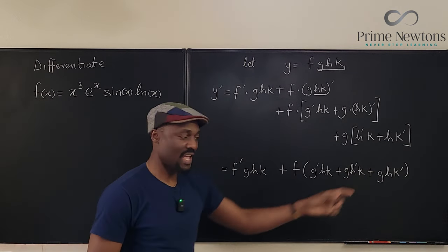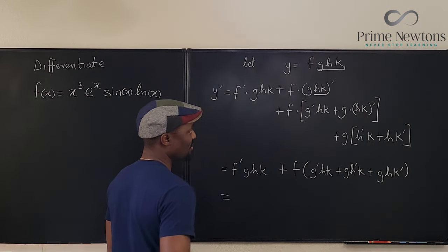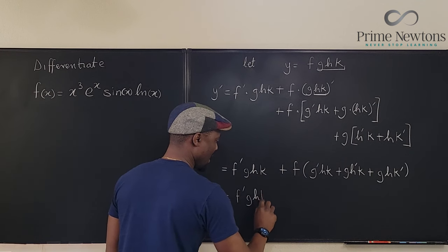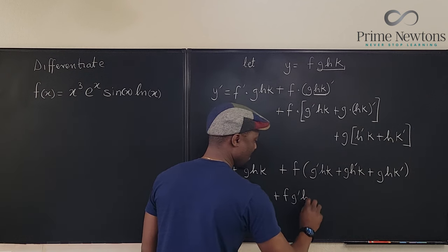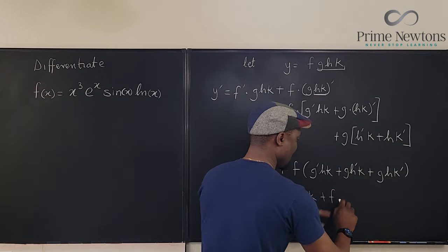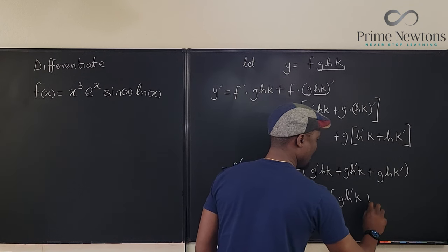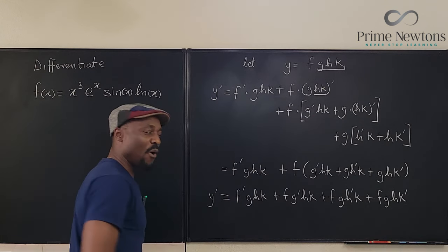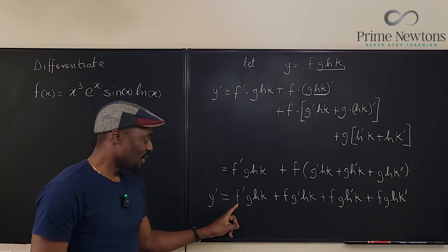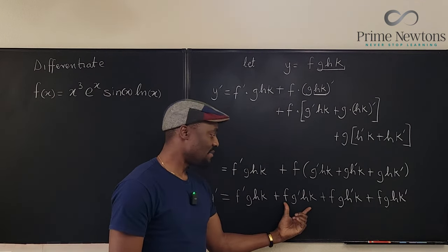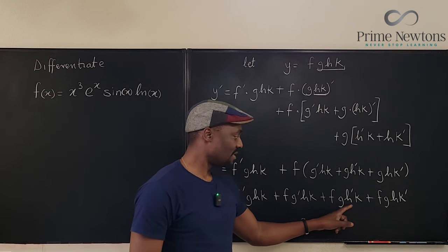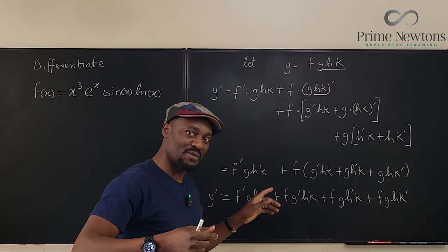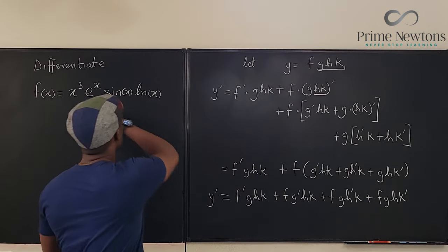Now I can distribute everything. After distributing f, I have: f prime·g·h·k, plus f·g prime·h·k, plus f·g·h prime·k, plus f·g·h·k prime. That is y prime. Look at what we have: differentiate the first and keep everything else; keep everything else but differentiate the second; keep everything else and differentiate the third; then keep everything else and differentiate the last one. The derivative is just moving from the first to the second to the third to the fourth — that's how you differentiate a product.